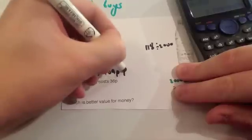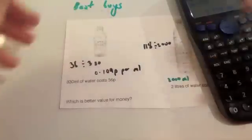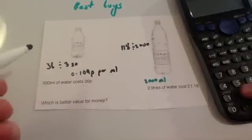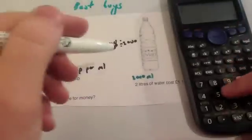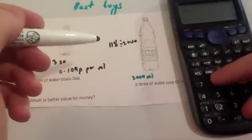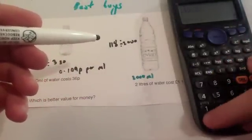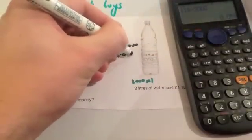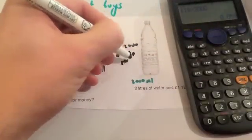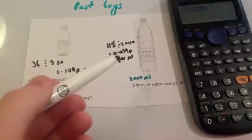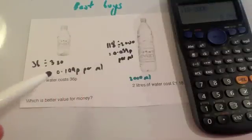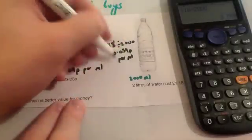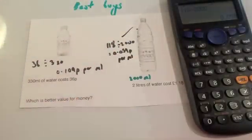This option, obviously it's water so it's quite cheap for each milliliter. This option is 118 pence divided by 2000, which equals 0.059 pence per milliliter. Obviously, 0.059 pence is cheaper than 0.109 pence. This is the better option because it's a lower value cost per milliliter. So this is the best option.